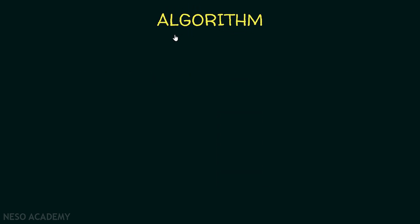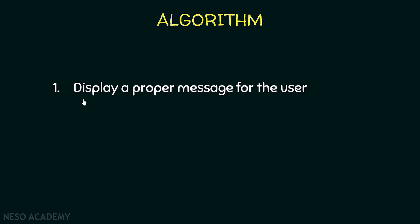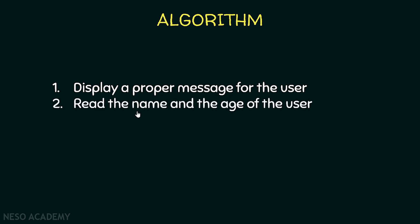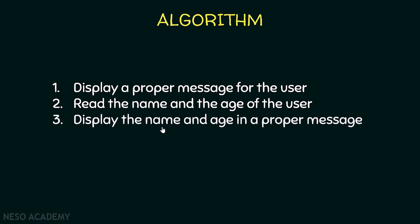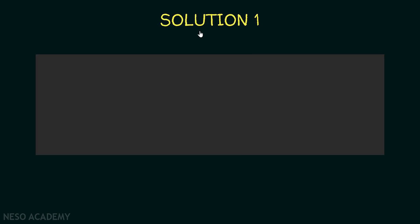Now let's look at the algorithm we're going to follow. First, we will display a proper message for the user — for example, 'Enter your name and age.' After that, we want to read the name and the age from the user, so we are going to need a scanner object. Finally, we will display the name and the age in a proper message.